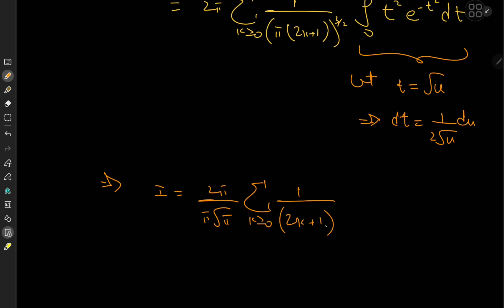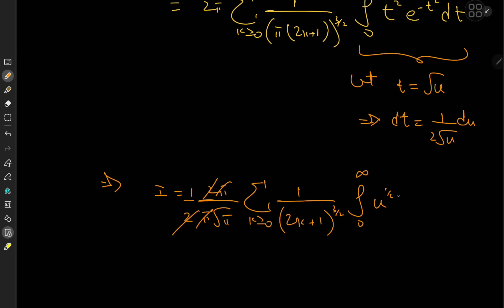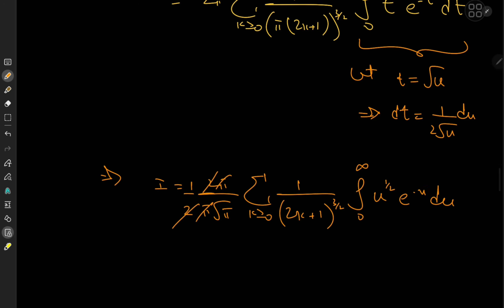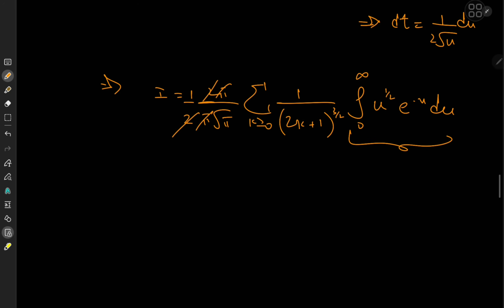After the substitution t = √u, the integral from 0 to infinity of t² · e^(−t²) dt becomes the integral from 0 to infinity of u · e^(−u) · (1/2) · u^(−1/2) du, which is (1/2) times the integral of u^(1/2) · e^(−u) du. We recognize this as (1/2) · Γ(3/2), which equals (1/2) · (1/2) · Γ(1/2) = (1/2) · (1/2) · √π.